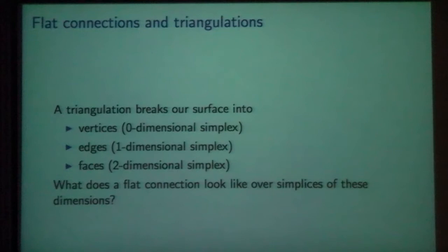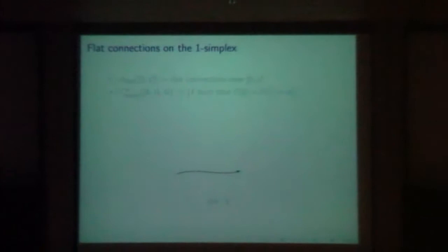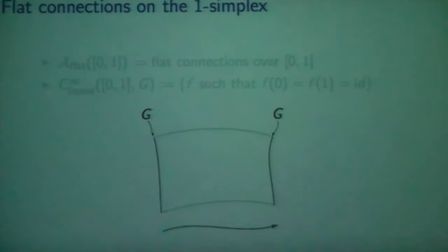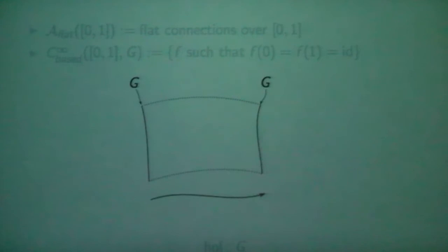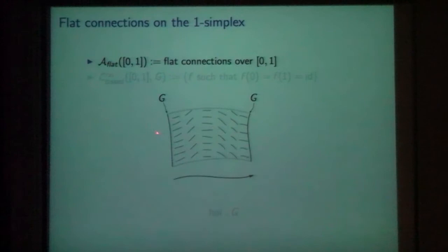Let's look at the one-simplex — we'll just skip the zero-simplex. Suppose we have a principal G-bundle over a one-simplex, which is just an interval. I'm going to assume it's trivial because we can afford to trivialize it. The flat connection on that bundle just looks like a foliation.